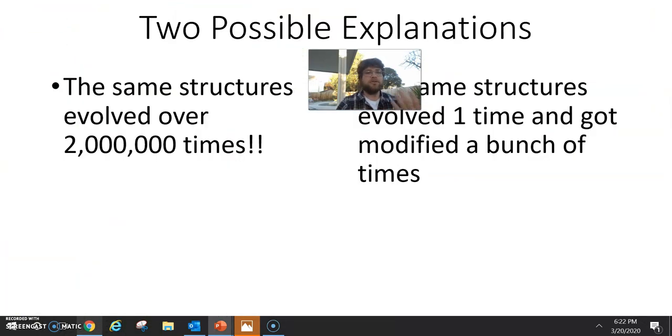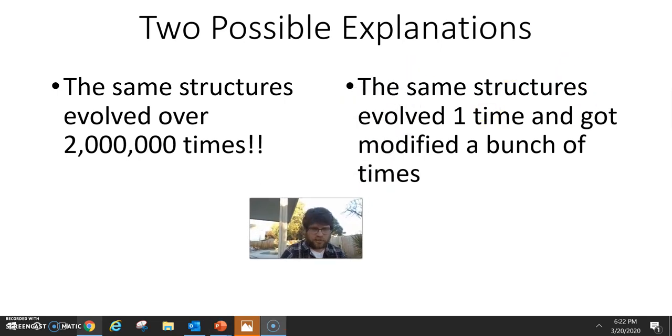Okay. And again, going back to those two possible explanations, when we see all of these cell similarities, that is giving us evidence of this right explanation that the same structure evolved one time and got modified a bunch of times versus connecting transcription and translation together 2 million times.